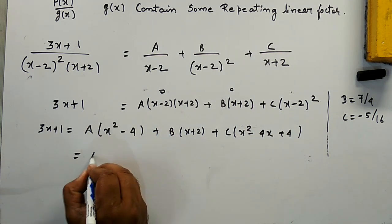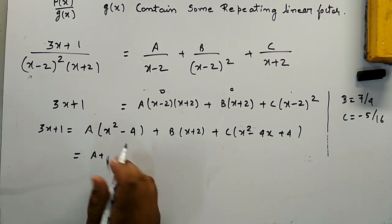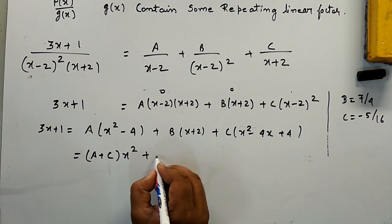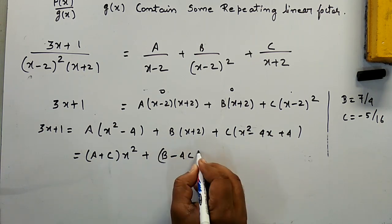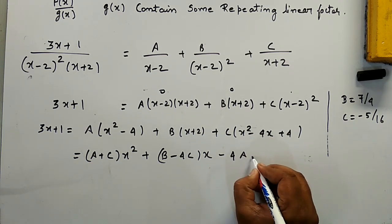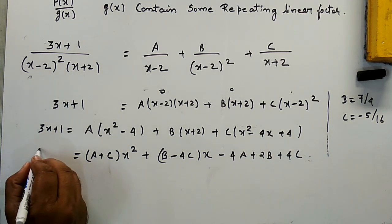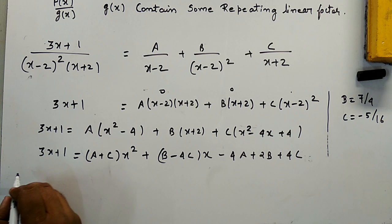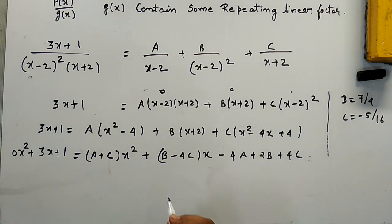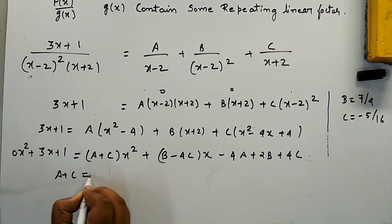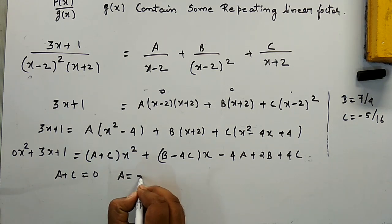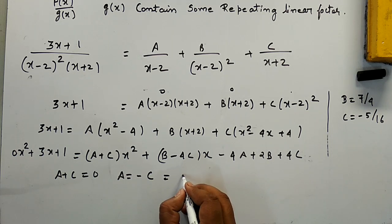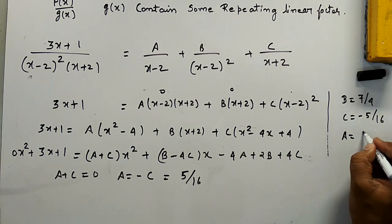Taking the coefficient of x² separately, I get (A + C)·x². Since there is no x² term on the right side (which is 3x + 1, so the coefficient of x² is 0), we have A + C = 0. Therefore A = -C = 5/16.